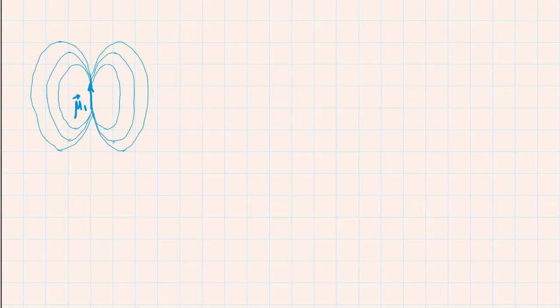Let us now imagine that the magnetic field is created by the magnetic moment mu1. B of mu1 looks like this. And this magnetic field acts on the magnetic moment mu2. Here is the distance vector r.